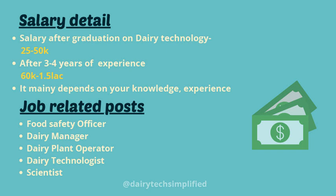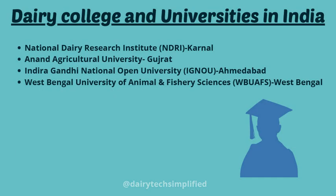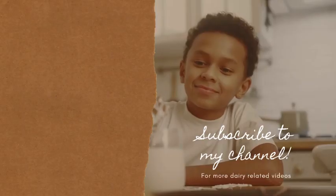Some well-known dairy universities in India are: National Dairy Research Institute (NDRI), situated in Haryana; Anand Agricultural University, situated in Gujarat; Indira Gandhi National Open University (IGNOU), situated in Ahmedabad; and West Bengal University of Animal and Fishery Sciences, situated in West Bengal. At present, there are more than 50 dairy colleges in India.